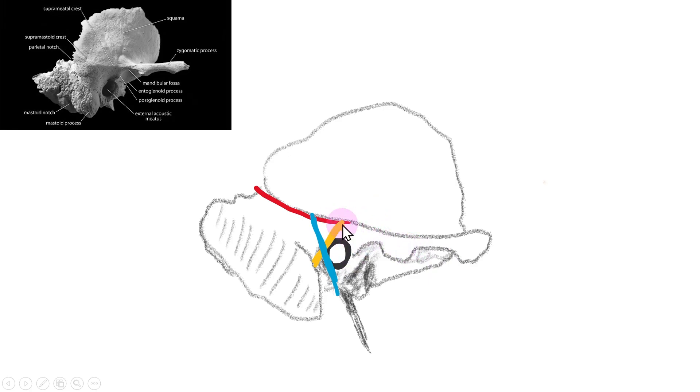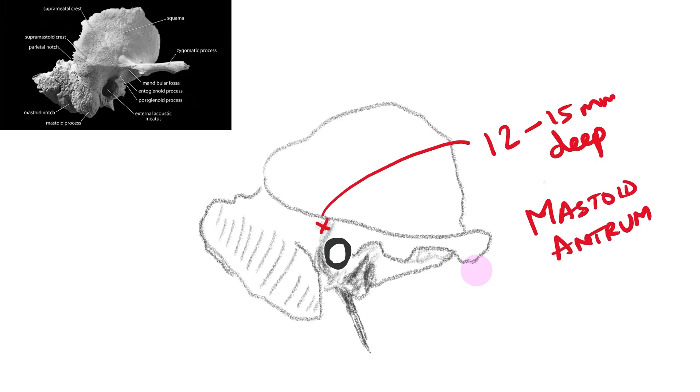The area bounded by these three lines is known as MacEwen's triangle. Why is this triangle so important? This triangle corresponds to the mastoid antrum in an adult. If you drill 12 to 15 millimeters deep to this point, you will reach the mastoid antrum. It is a landmark and a safe corridor to approach in cortical mastoidectomy.